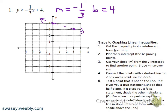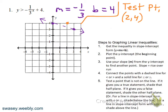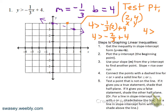Next we'll do a test point — you can pick any point not on the line. I'll use (2, 4), replacing x with 2 and y with 4. We get: 4 is greater than negative one-third times 2 plus 4. That gives us 4 greater than three and one-third, which is true. So we shade on the side where the test point was. If it were false, we'd shade the other half-plane.